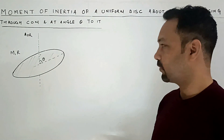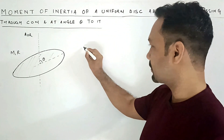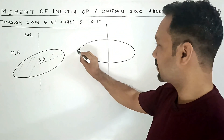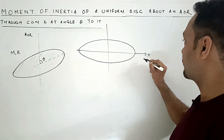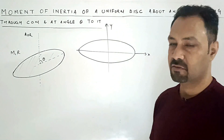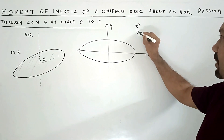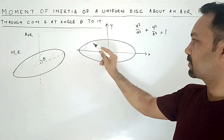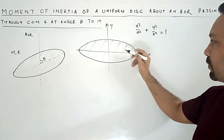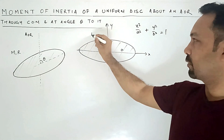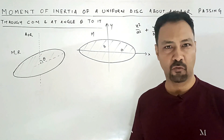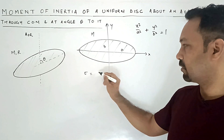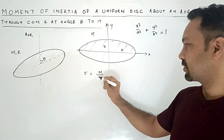So let's look at the moment of inertia of an elliptical disk first. Suppose this is an elliptical disk with its center at the origin, and the boundary of this disk has the equation x²/a² + y²/b² = 1. This is the disk, with semi-major axis a and semi-minor axis b. Total mass is m, and it is a uniform disk, so the mass density sigma equals mass divided by area, which is pi·a·b.